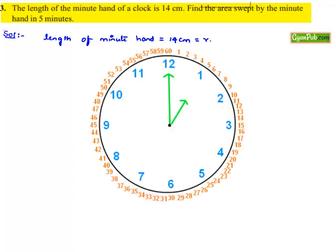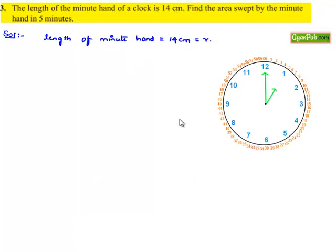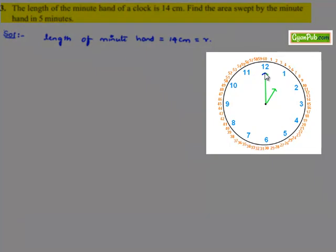Let us consider a clock. Here in the figure, the larger one is the minute hand. The length of the larger hand is given as 14 cm, and we need to find the area swept by it in 5 minutes.